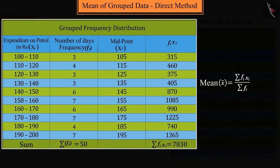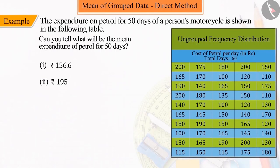We get 156.60. So we can say that the mean expenditure of petrol is 156.60 rupees. That is, option 1 is the correct answer.